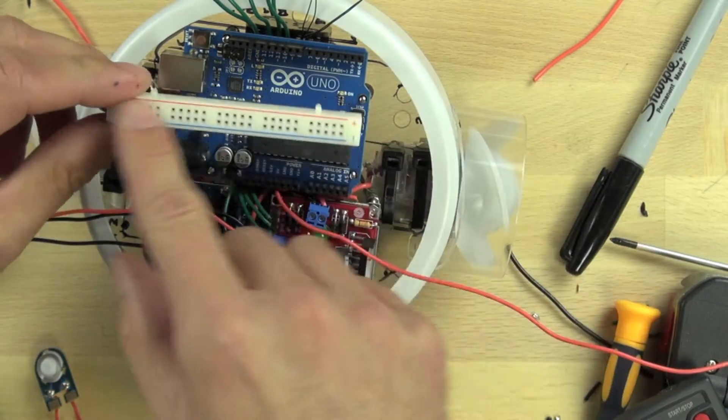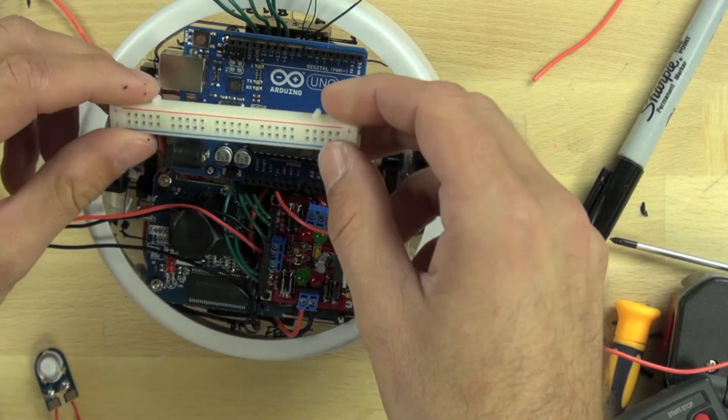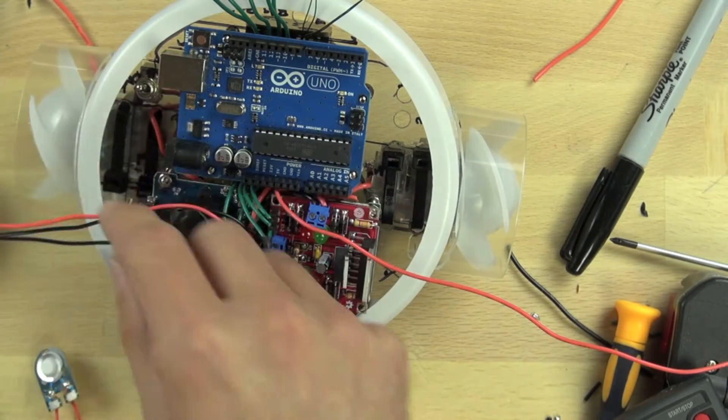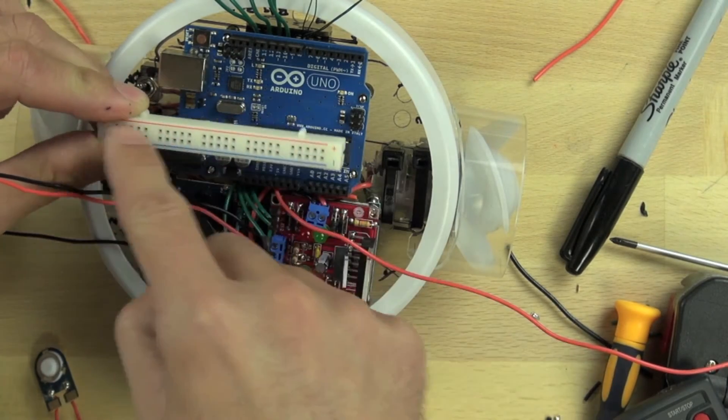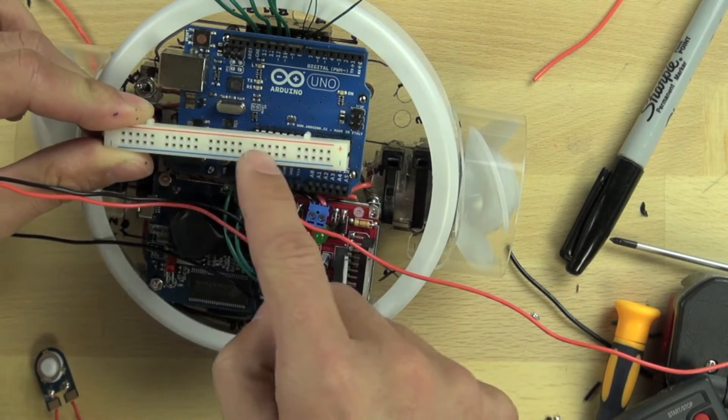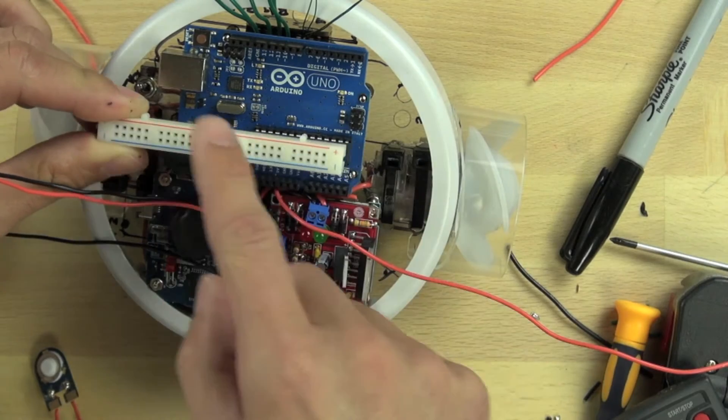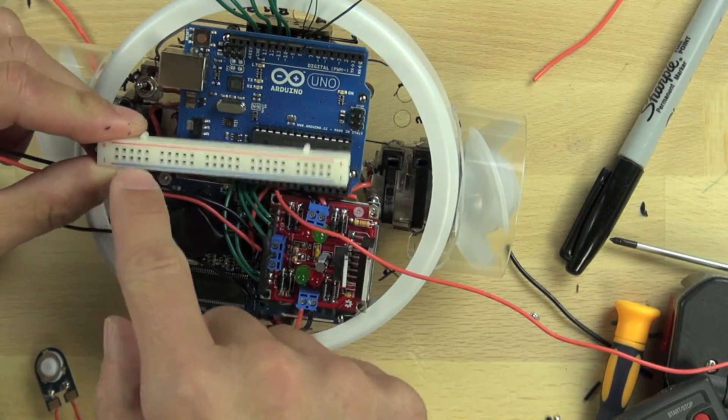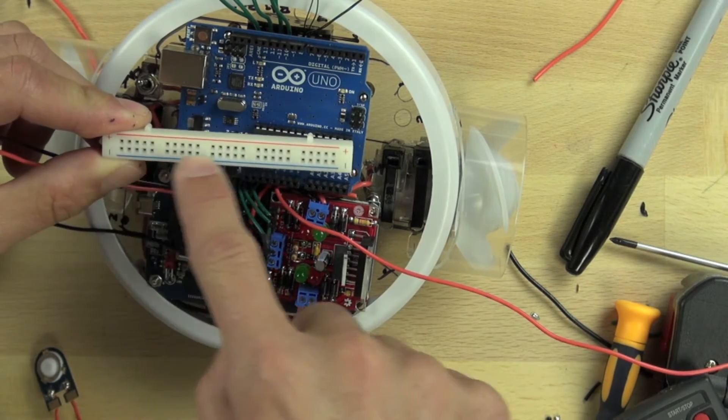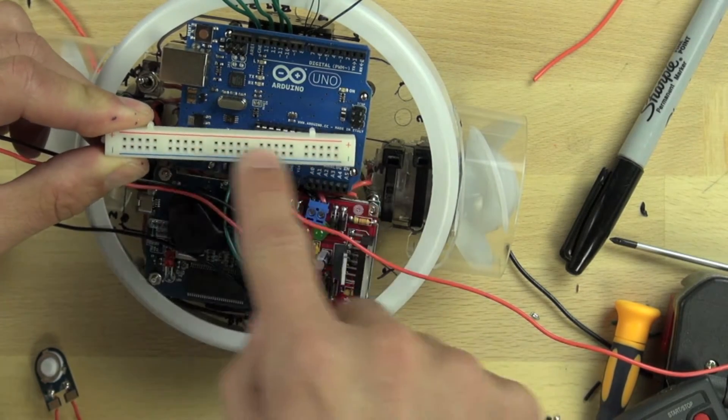Because this will allow us to distribute the power to different locations, so we can take our positive and our negative and connect them in here, and then anything else that needs 5 volt operational power can pull it from this, because when you connect a positive here and a negative here, it powers all these little points, all these little connections.